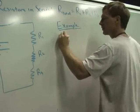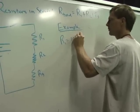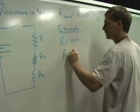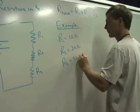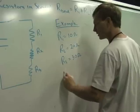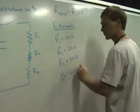Let's say the first resistor is 10 ohms, the second resistor is 20 ohms, and the third resistor is 30 ohms. Let's say the voltage is 6 volts.